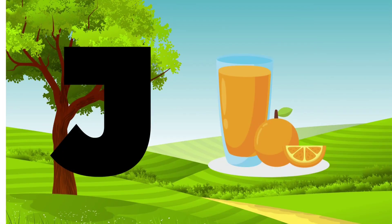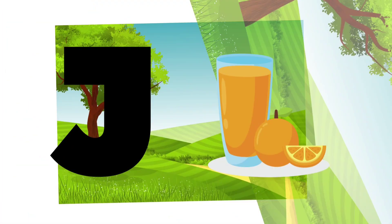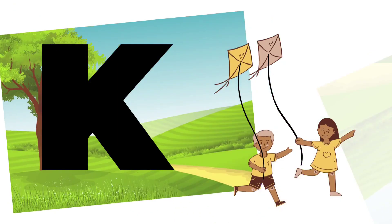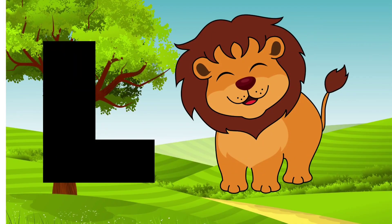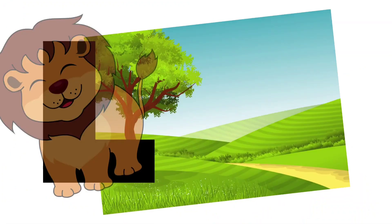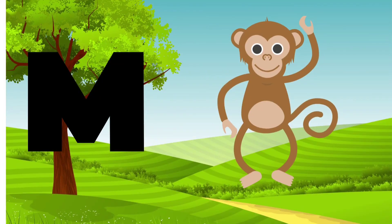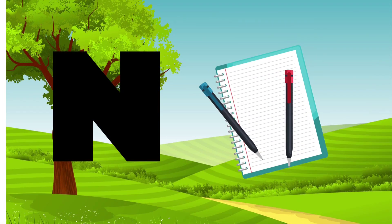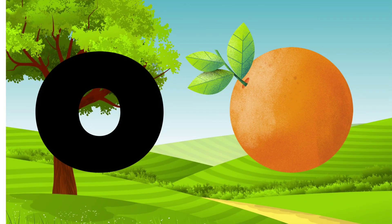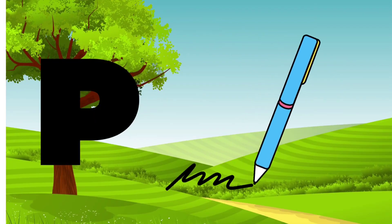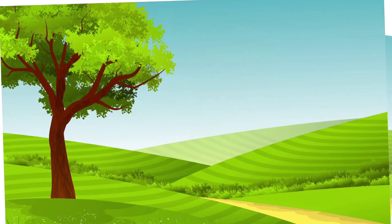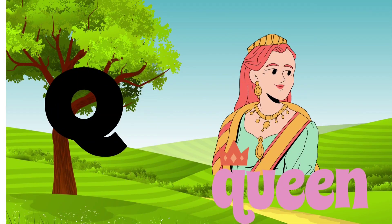J for juice, K for bike, N for lion, N for monkey, N for notebook, O for orange, B for plane, Q for queen.